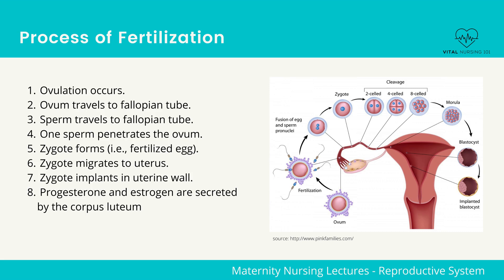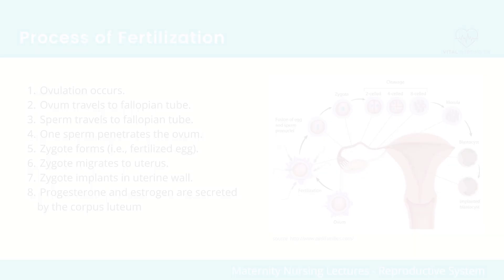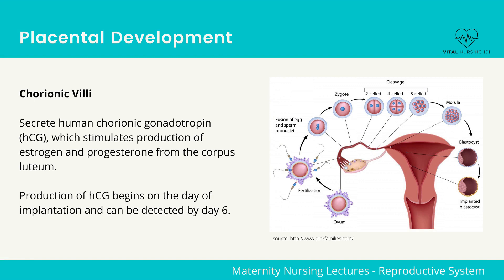Five: zygote forms, which is a fertilized egg. Six: zygote migrates to the uterus. Seven: zygote implants in the uterine wall. Eight: progesterone and estrogen are secreted by the corpus luteum to maintain the lining of the uterus and prevent menstruation until the placenta starts producing these hormones. Now let's talk about placental development.